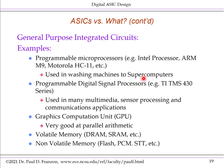What ASICs aren't are general-purpose integrated circuits. Examples include programmable microprocessors such as the Intel processors, ARM M9, and Motorola Embedded Processor. These sorts of general-purpose processors power everything from washing machines to supercomputers.